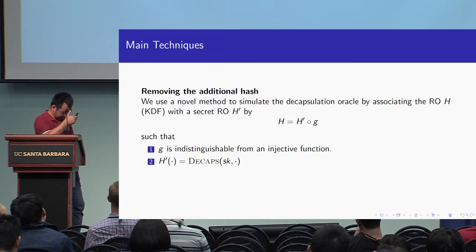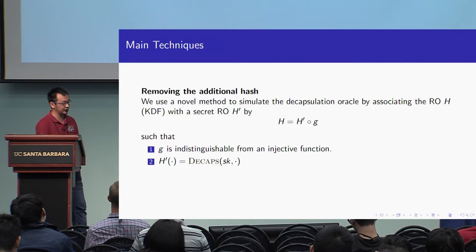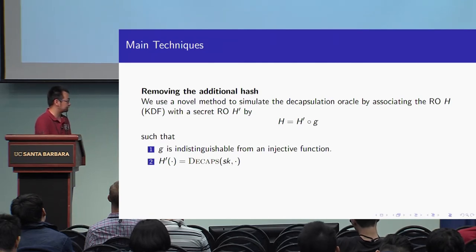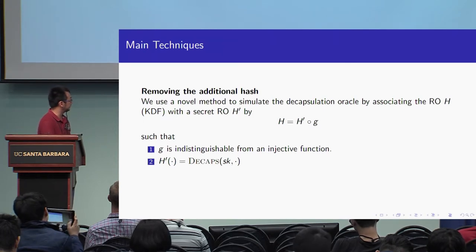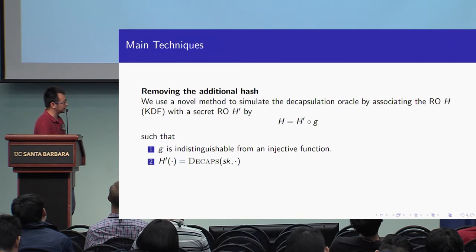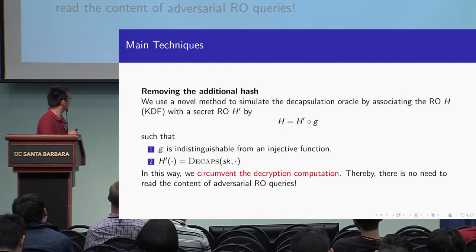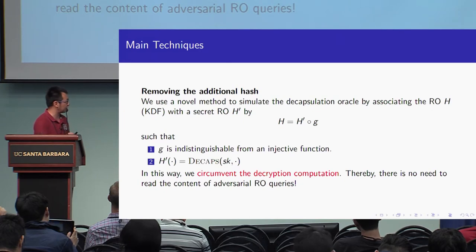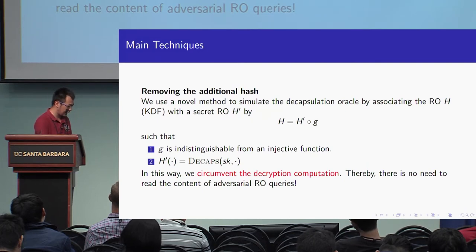To remove the additional hash, we use a technique from Zhandry's compressed oracle work. If we view the hash as consisting of two parts — a function G and H-prime — then H-prime can be viewed as a decapsulation function, and G as an injective function acting as the encryption oracle in the proof. In this way, we can answer the decryption oracle without needing to add the additional random oracle hash.